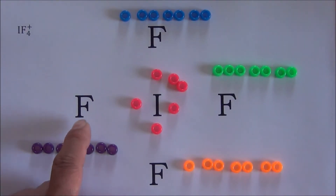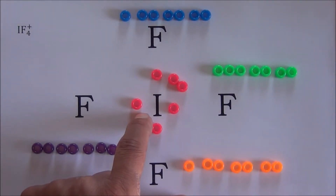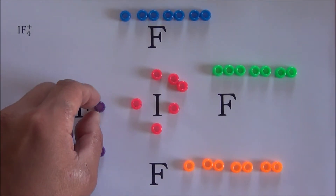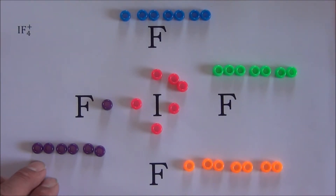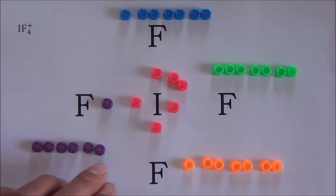Let's place the valence electrons of the fluorine atom on the left first. From the skeleton structure, the fluorine atom on the left has only one neighbor, which is the central iodine atom. Therefore, we will take one of the valence electrons of the fluorine atom on the left and place it between the fluorine atom and its only neighbor. Then we will place the six valence electrons left into three groups. Remember, we prefer groups of two electrons, unless we have an odd number of valence electrons left. If we have an odd number, we will have one group with only one electron. Since six is an even number, we will have three groups of two electrons. We will do the same for the other three fluorine atoms.